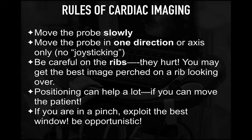To cover some basic rules of cardiac imaging: move the probe slowly, as most people who begin looking at the heart with ultrasound generally move the probe like a joystick. You really should stick to one type of probe movement — move in one direction or axis. Be careful on the ribs; they actually really hurt. You may get the best image perched on a rib looking over. Use lots of gel and a very gentle hand to optimize your imaging. Positioning can help a lot — putting the patient in even a small amount of left lateral decubitus can help parasternal imaging greatly. If you're in a pinch, exploit the best window and be opportunistic, like you would in cardiac arrest when obtaining a subcostal four-chamber.